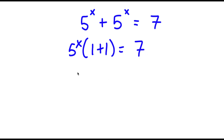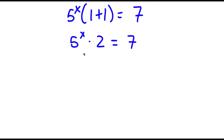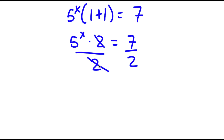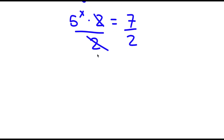Now 1 plus 1 is equal to 2, so I have phi to the power of x times 2 is equal to 7. Now I'm going to divide both sides by 2, so these two cancel out, and I get 5 to the power of x is equal to 7 over 2.